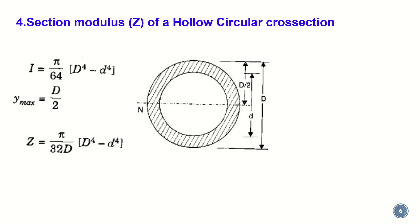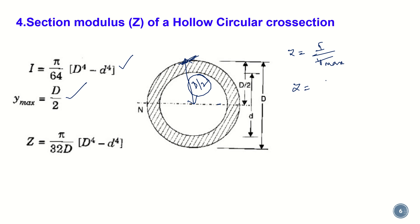For a hollow circular section — like a ring — there is an internal diameter d and an external diameter D. Similar to the hollow rectangle, y_max = D/2 (the outer value). The moment of inertia for a hollow circular section is (π/64)(D⁴ − d⁴). Substituting into Z = I / y_max gives Z = (π/32D)(D⁴ − d⁴).